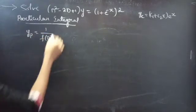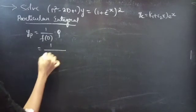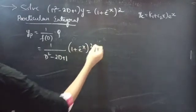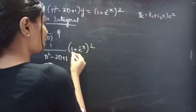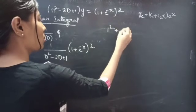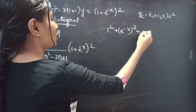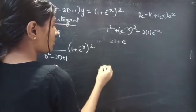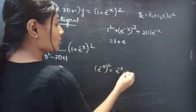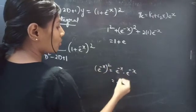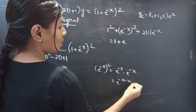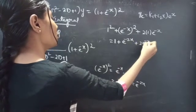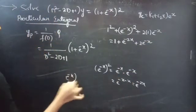Now let's find the particular integral. yp = (1/f(D))·Q = 1/(D² - 2D + 1) · (1 + e^(-x))². Let's expand (1 + e^(-x))², which is in the (a + b)² form: a² + 2ab + b². So (1 + e^(-x))² = 1 + 2e^(-x) + e^(-x)·e^(-x). Adding the powers: e^(-x)·e^(-x) = e^(-2x).